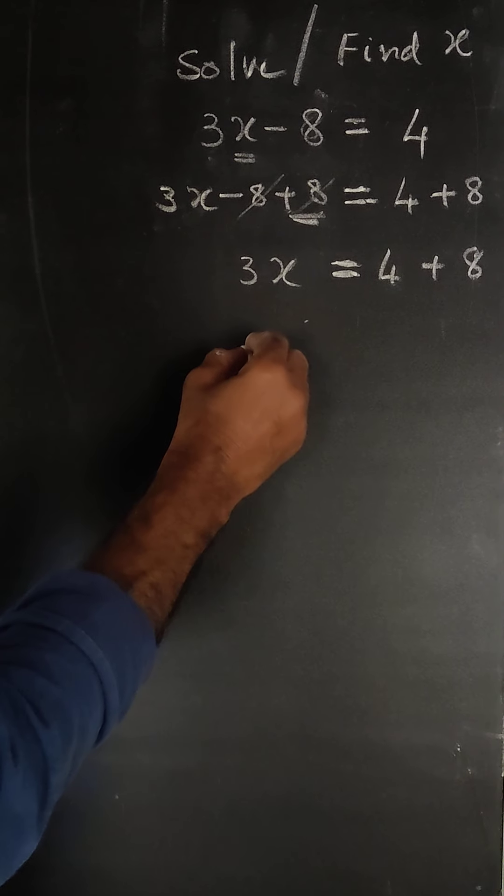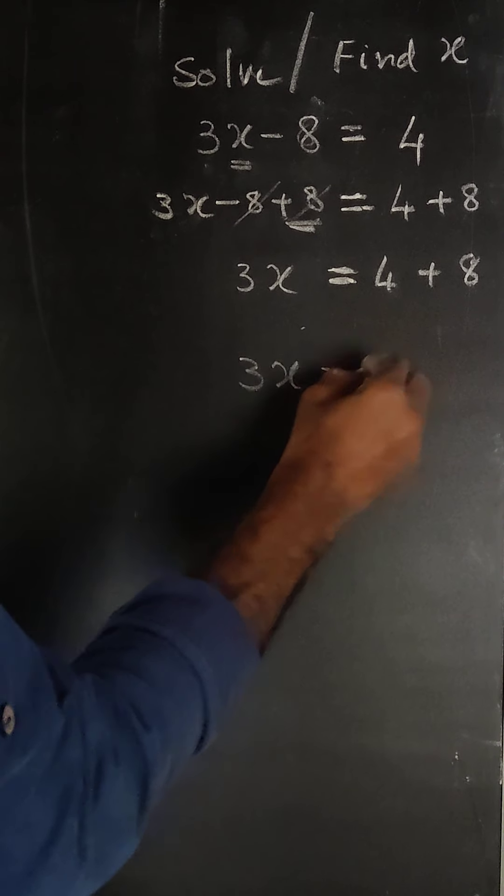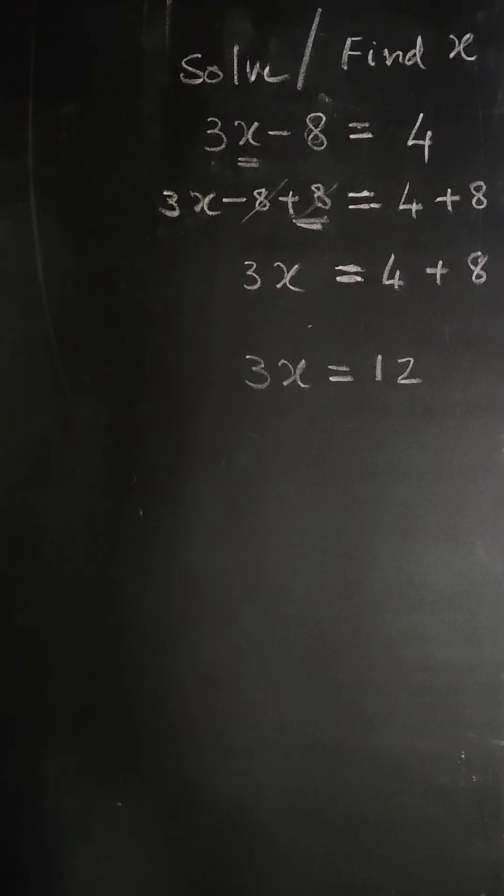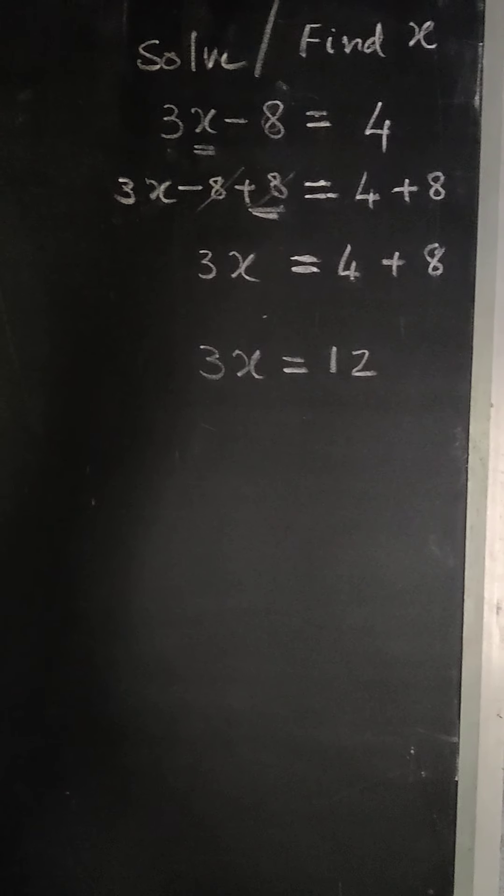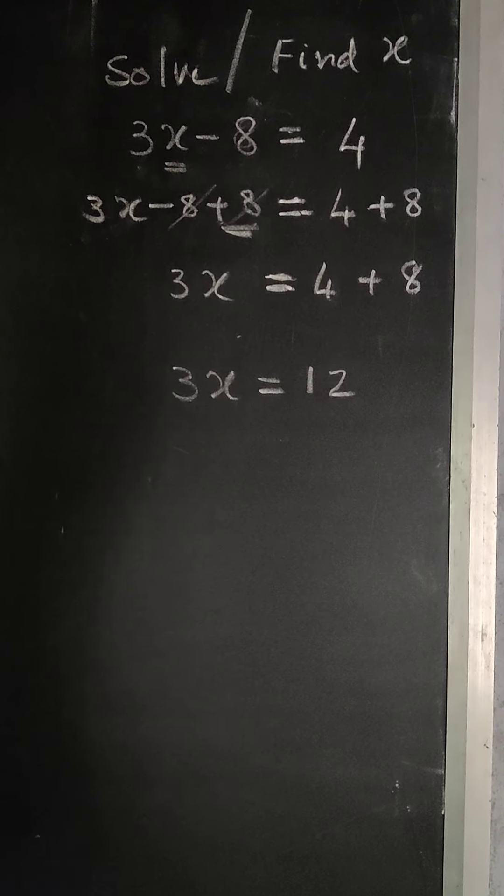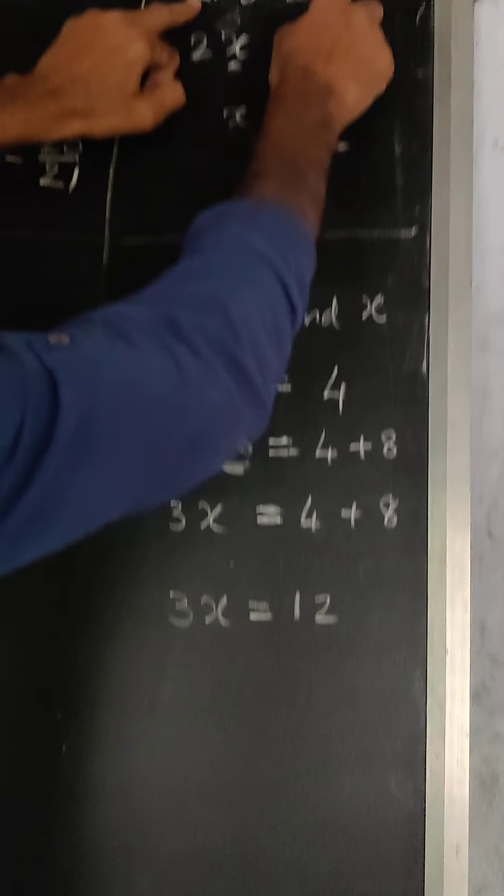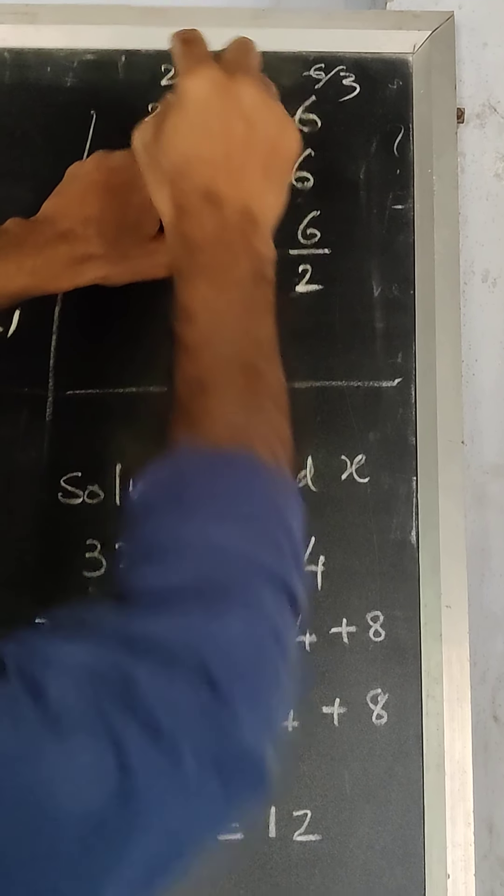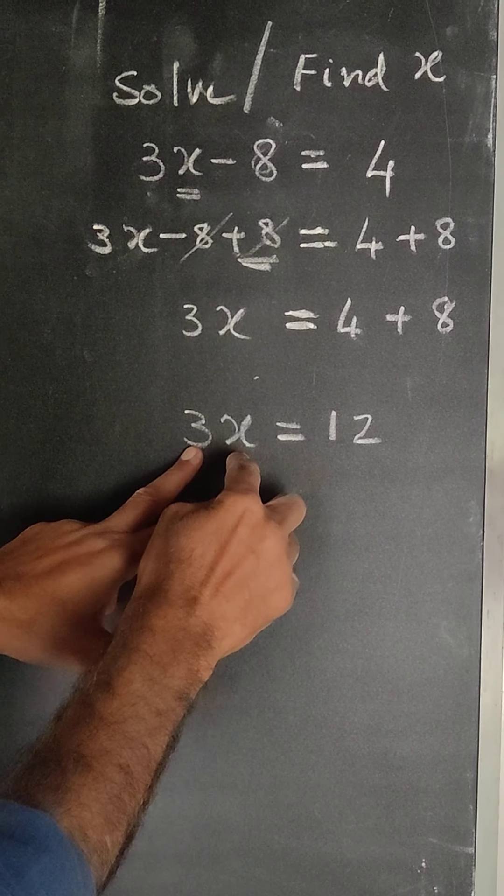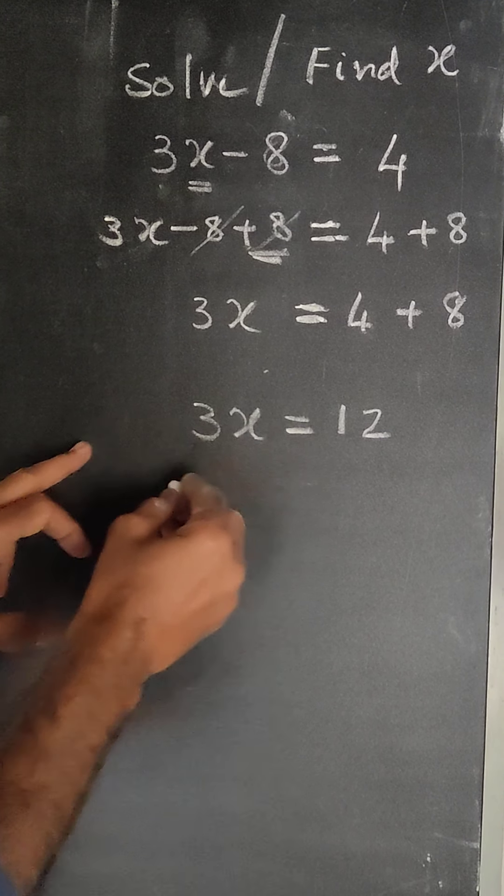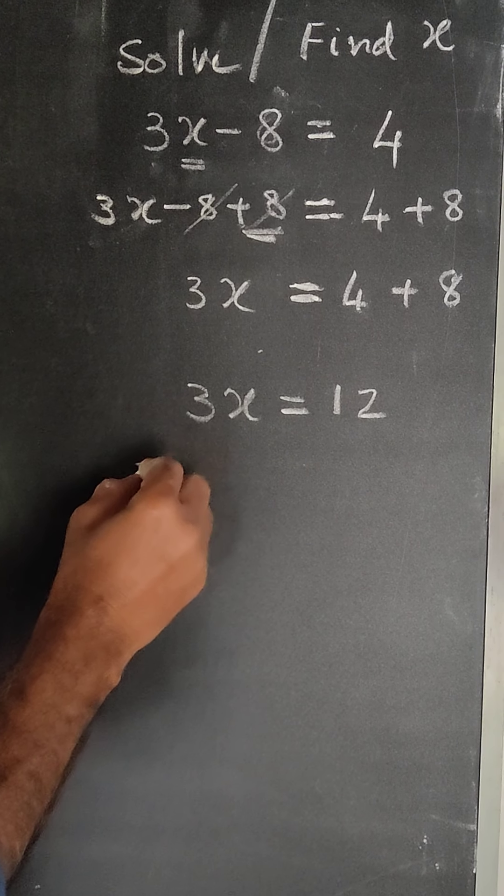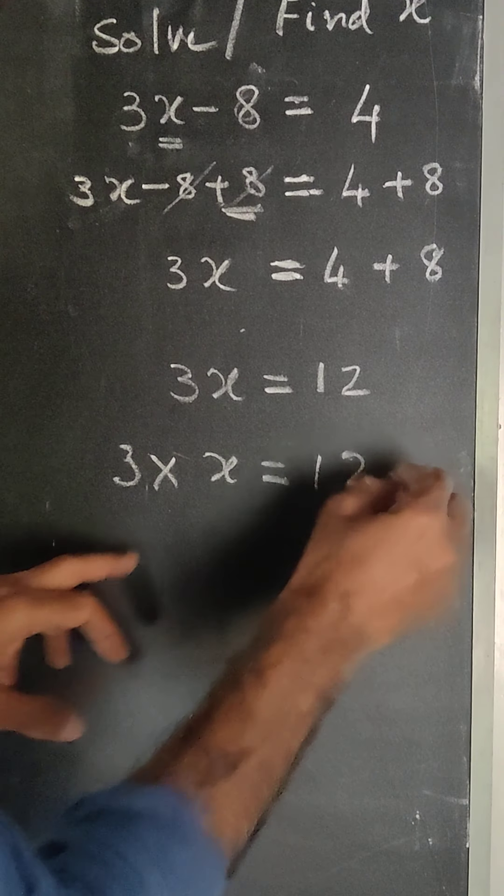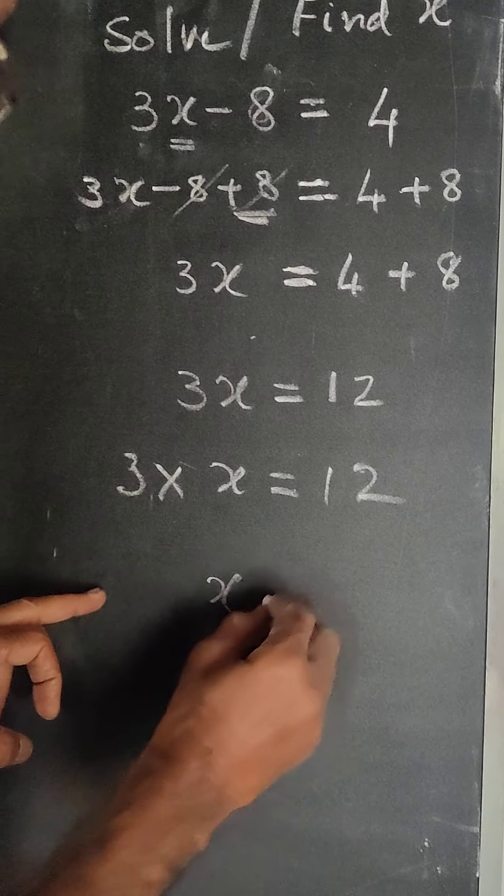So 3x is equal to 12. Now, x is equal to 3 times x. 2 times 3 is 6, 2x is equal to 6 by 3, 3x is equal to 12. So x is equal to 12.